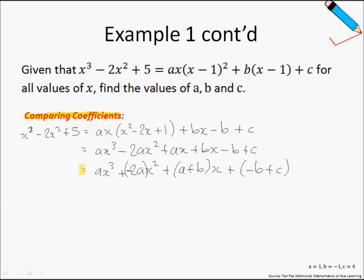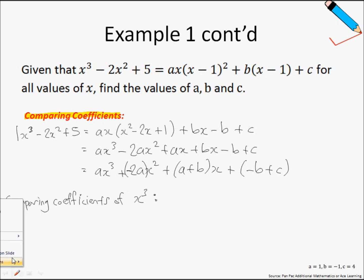Comparing coefficients of x cubed: on the left-hand side, the coefficient of x cubed is 1. On the right-hand side, the coefficient of x cubed is a. So we can safely say 1 equals a, which means a equals 1. We have already solved for a.